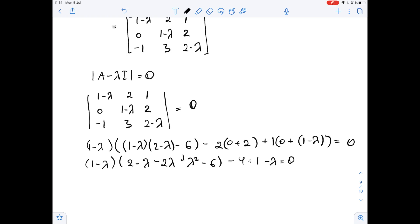After simplifying this, we get lambda cubed minus 4 lambda squared plus 7 equals 0